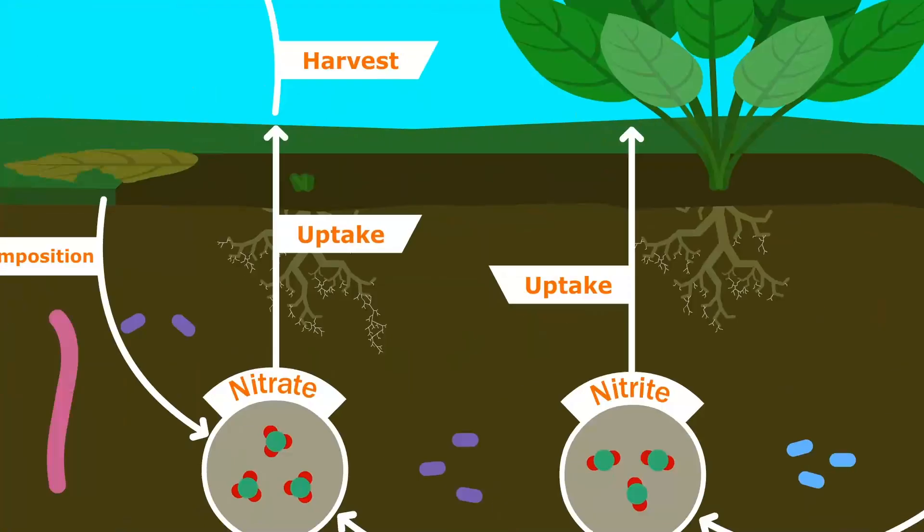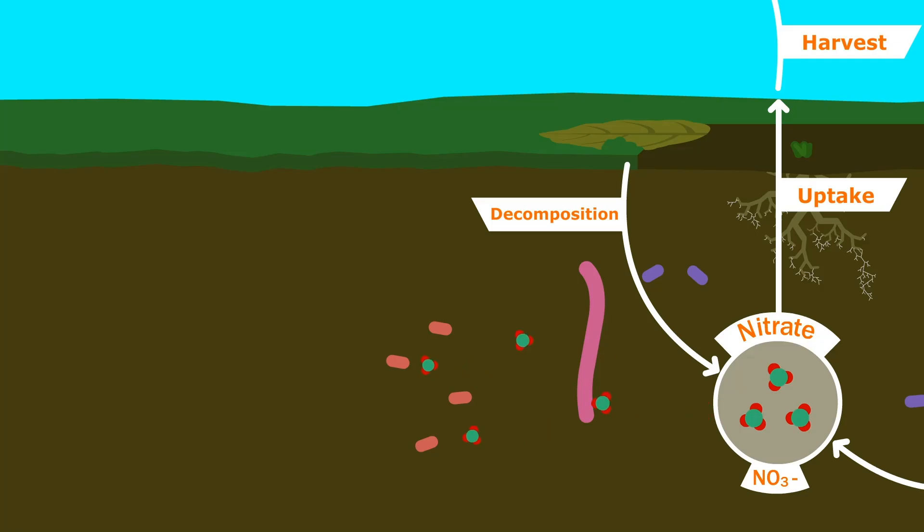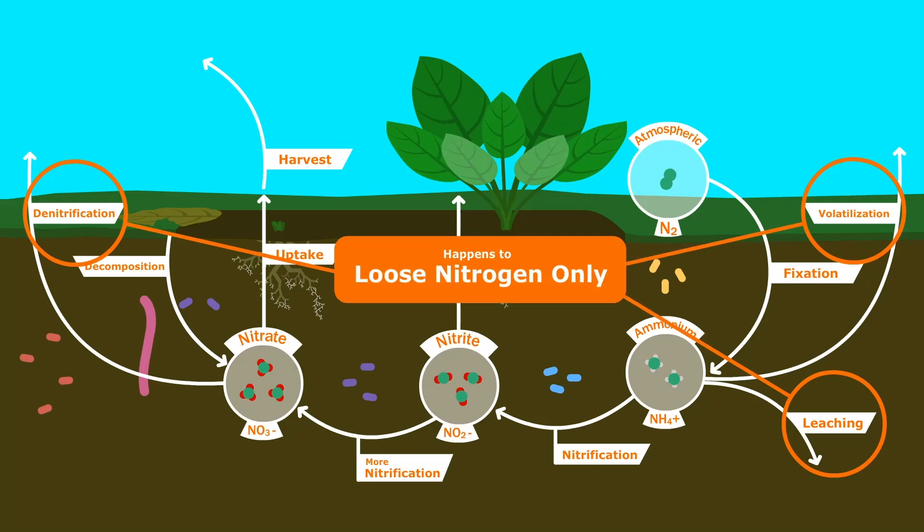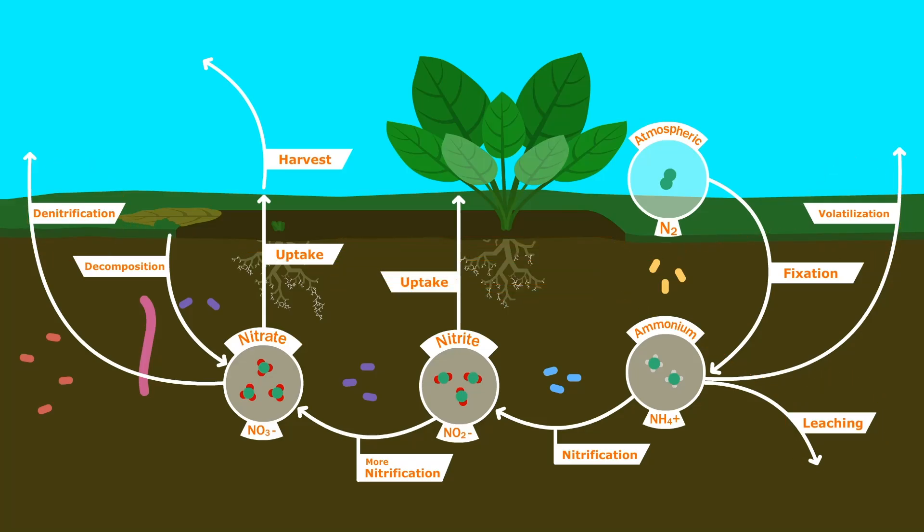Or, if the soil lacks oxygen, different anaerobic bacteria grow, which convert nitrates back into atmospheric nitrogen. Notice that these things only happen with loose nitrogen in the soil, not with nitrogen inside organisms.